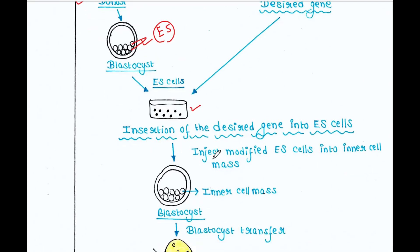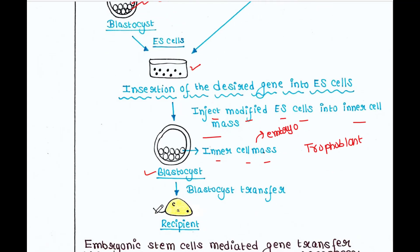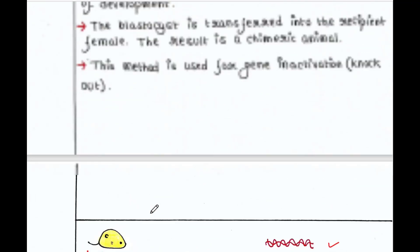You then insert the modified embryonic stem cells back into the inner cell mass of the blastocyst. The blastocyst contains two types of cells: the inner cell mass and the trophoblast. The trophoblast generally produces the extra-embryonic part, while the inner cell mass cells take part directly in embryo formation. You insert the modified embryonic stem cells into the inner cell mass so they can participate directly in embryo formation, and then transfer the blastocyst to the recipient mouse.